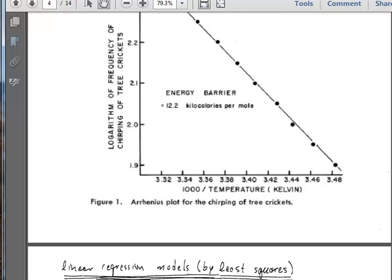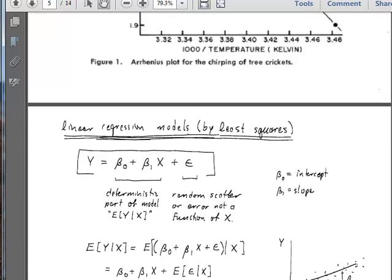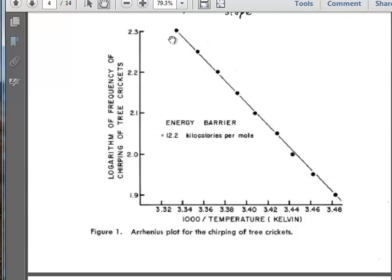The point that I should be making here is that these fall on a nice straight line. This author, I believe it's Laidler, has taken the slope of this line and found that it gives him a 12.2 kilocalories per mole activation barrier for this process. You can extract things that are physically meaningful parameters when you know the underlying theory by going through and doing this linearization procedure.